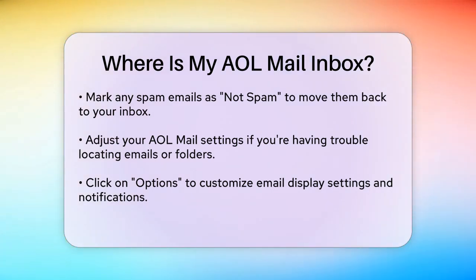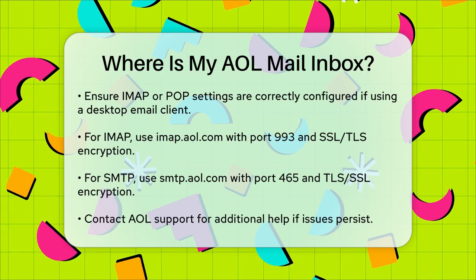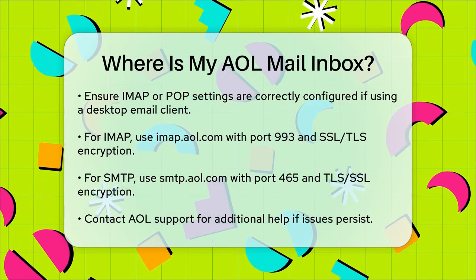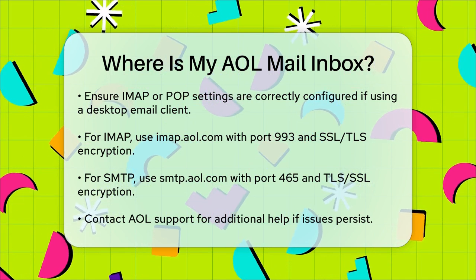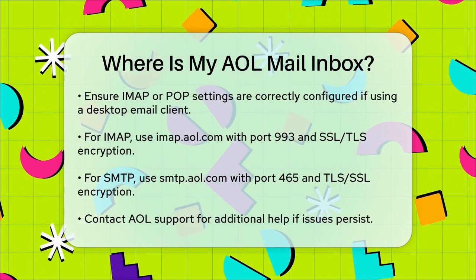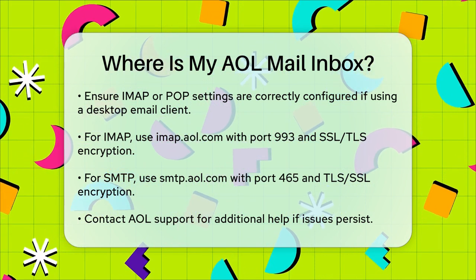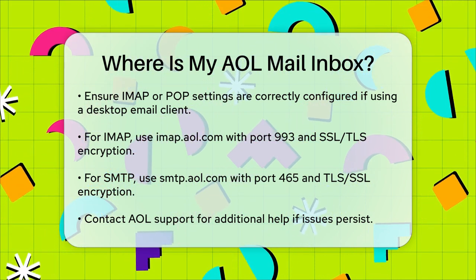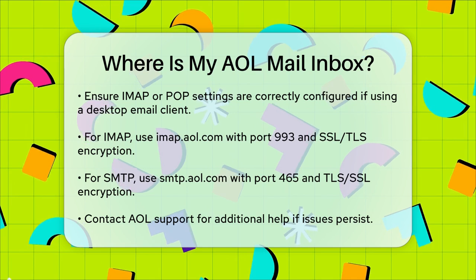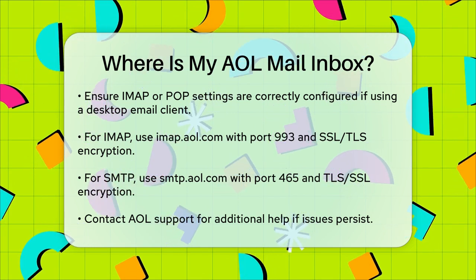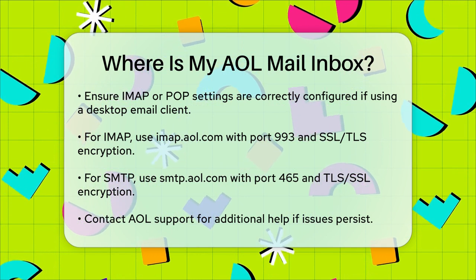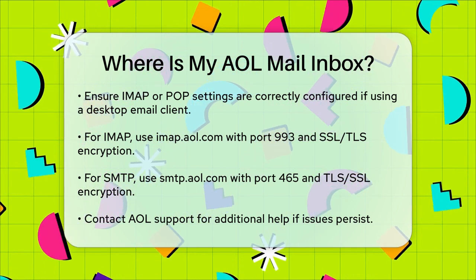Using IMAP or POP settings: if you're using a desktop email client like Microsoft Outlook or Mozilla Thunderbird, make sure your AOL mail settings are correctly configured. You'll need to set up the IMAP or POP settings to ensure your emails are syncing properly. For IMAP, use the server imap.aol.com with port 993 and SSL/TLS encryption. For SMTP, use smtp.aol.com with port 465 and TLS/SSL encryption. Make sure to use your full AOL email address and password for both.